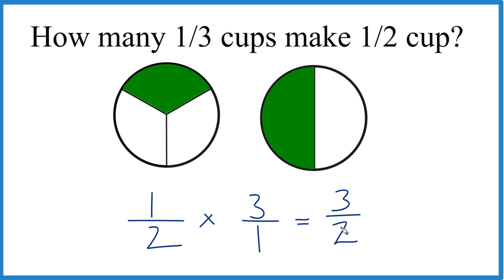And we have three-halves. Let's change this to a mixed fraction. Two goes into three. One times two is two. With one left over, bring the denominator across.